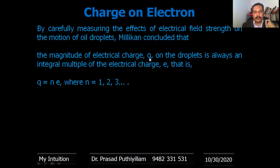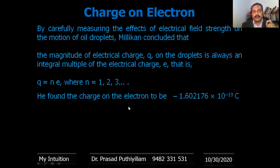The magnitude of electrical charge, q, on the droplet is always an integral multiple of the electrical charge, e. That is, q = ne, where n = 1, 2, 3, etc. He found that the charge of an electron to be negative 1.602176 × 10^-19 coulombs.